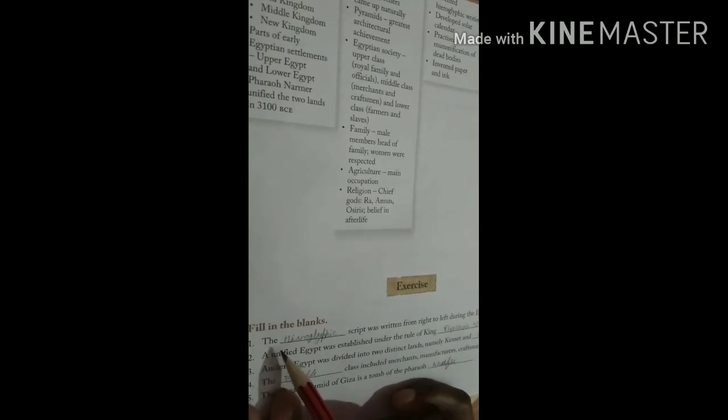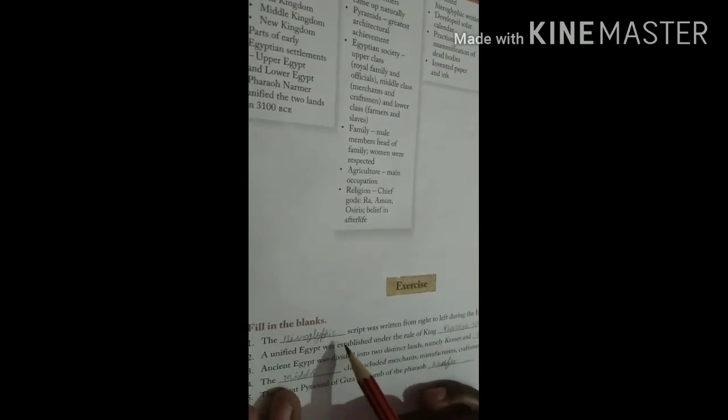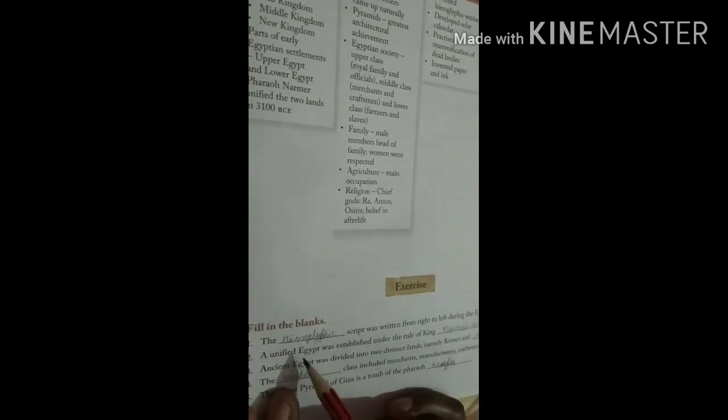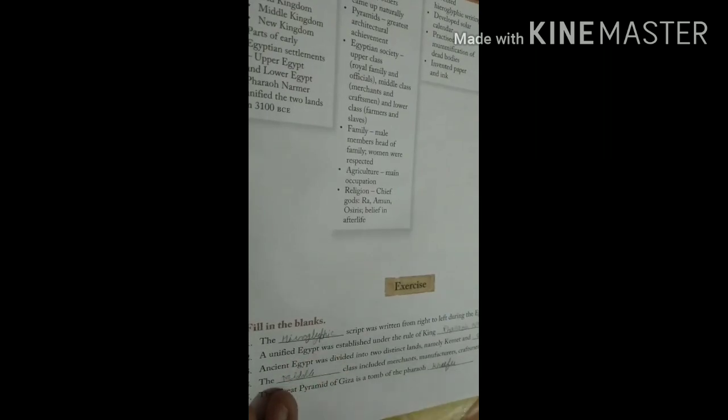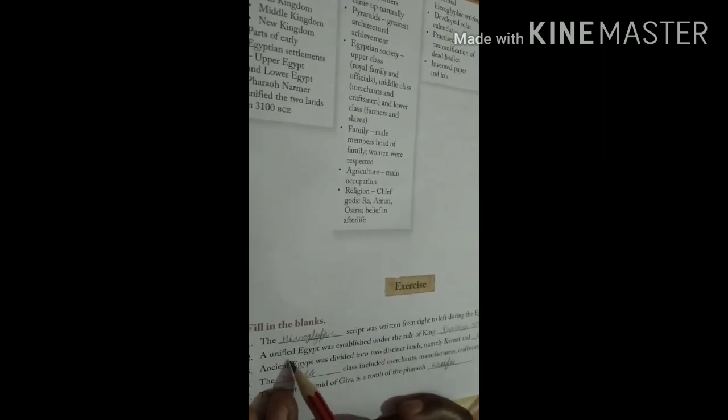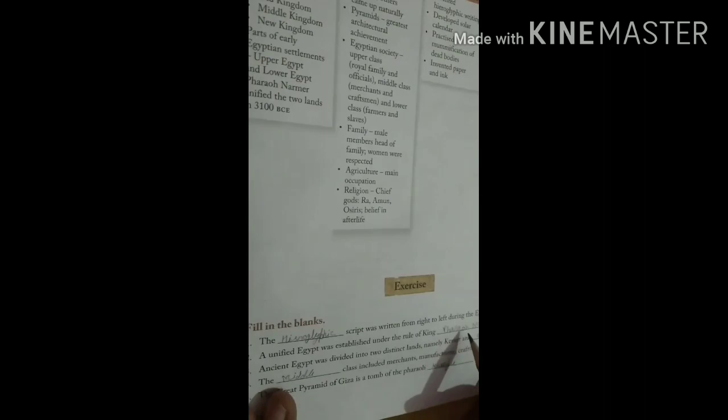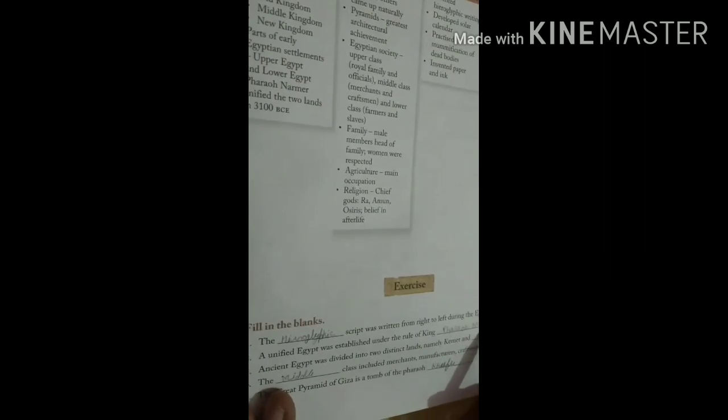Fill in the blanks. The hierographic script was written from right to left during the Egyptian Civilization. A unified Egypt was established under the rule of King Pharaoh Narmer.